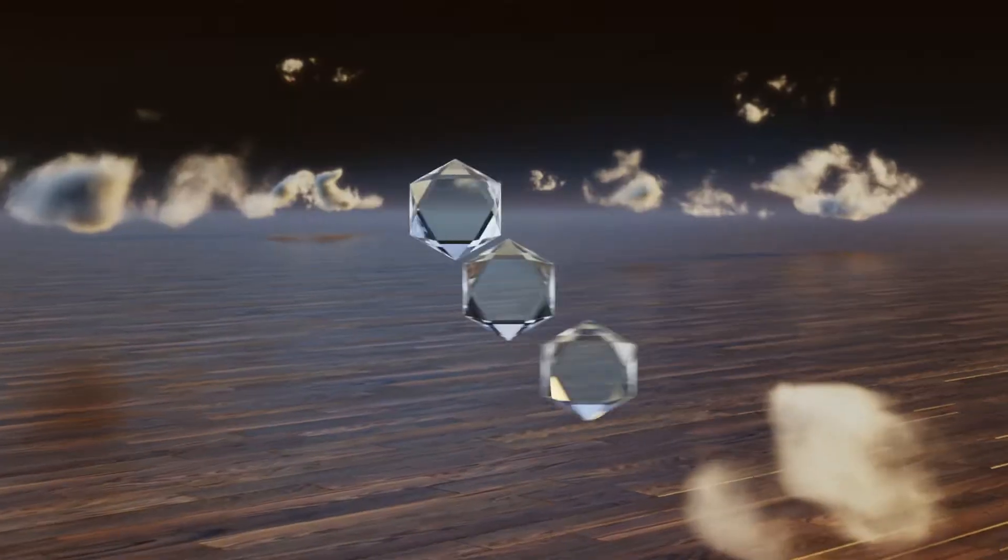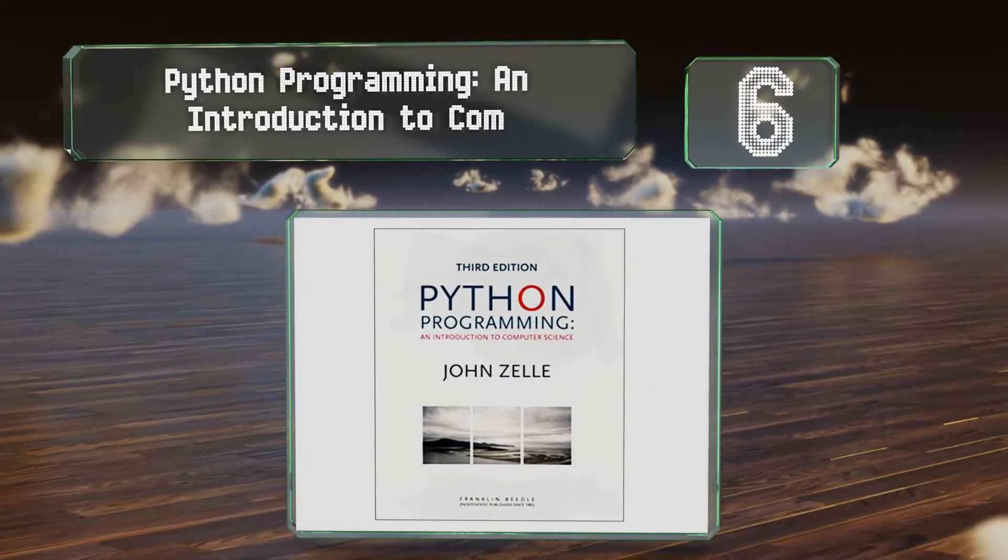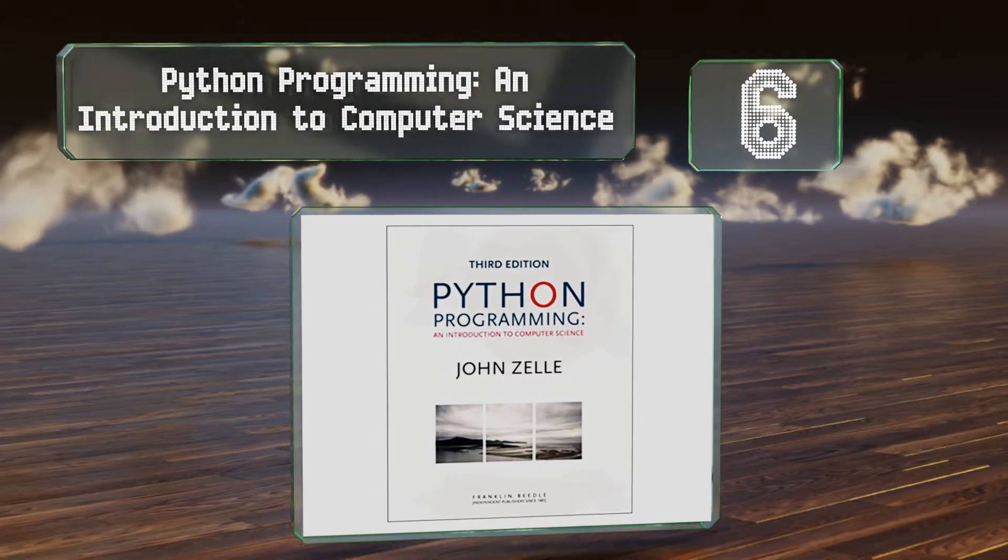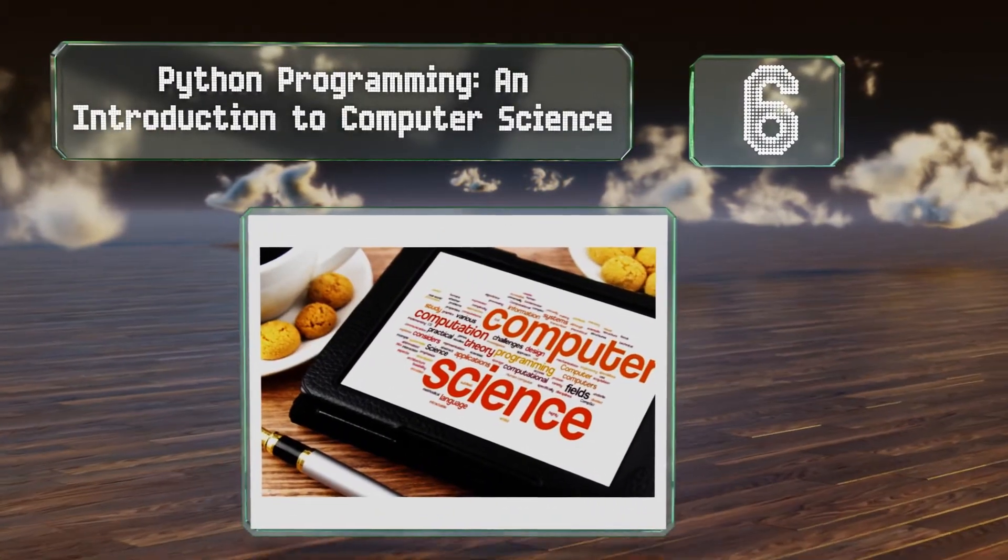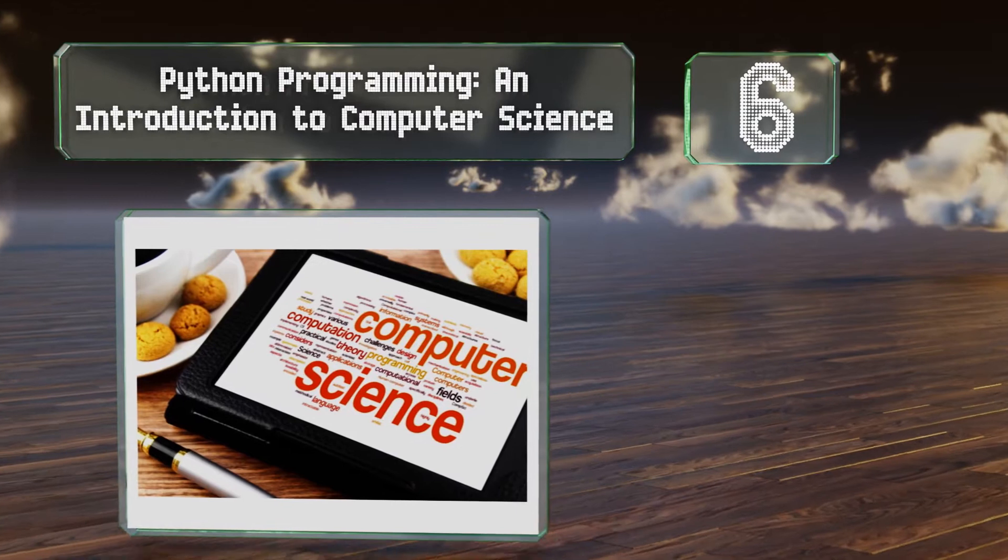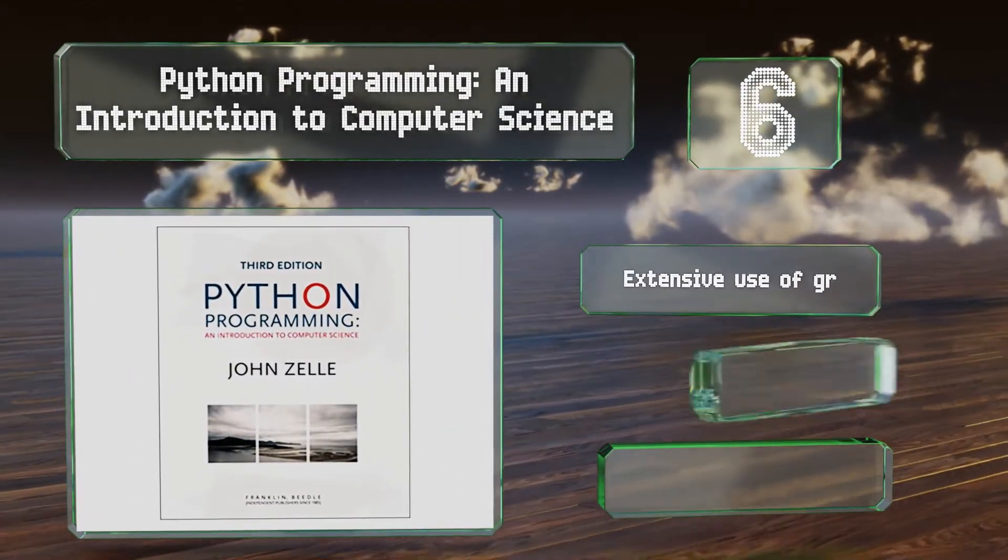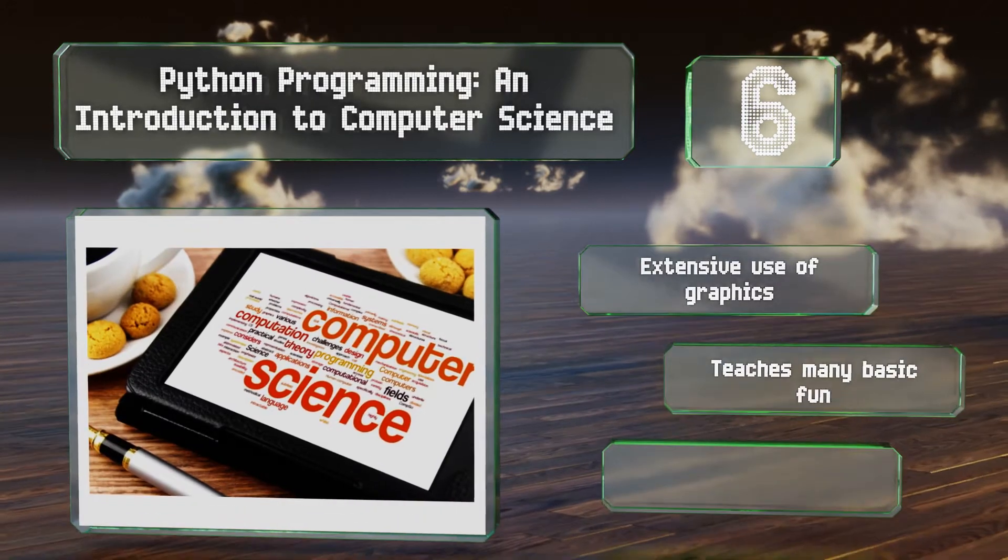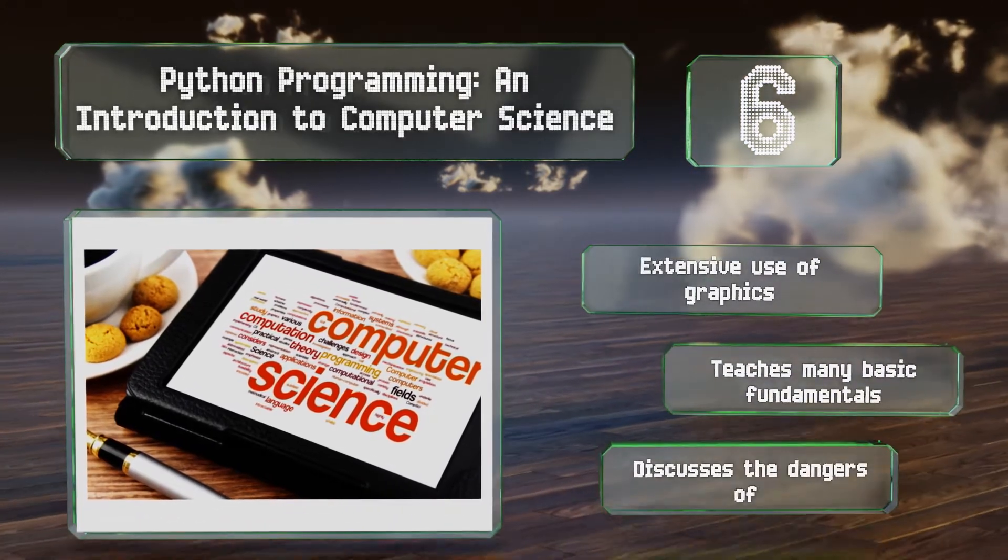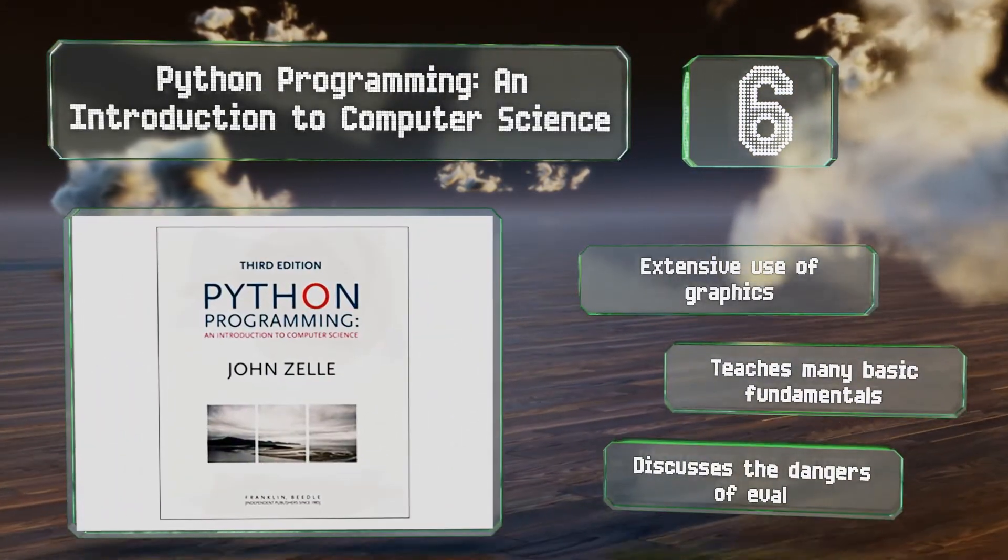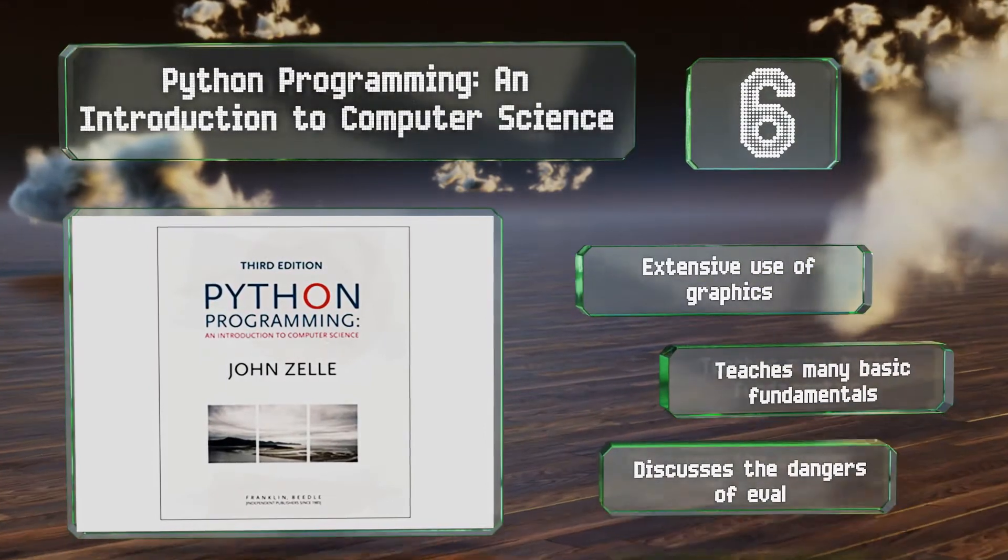Moving up our list to number 6, with more than 500 pages, Python Programming offers a lot of useful information. It would serve well as a college-level first course text in computing and takes a traditional approach with an emphasis on problem-solving. It features an extensive use of graphics and teaches many basic fundamentals, plus it discusses the dangers of eval.